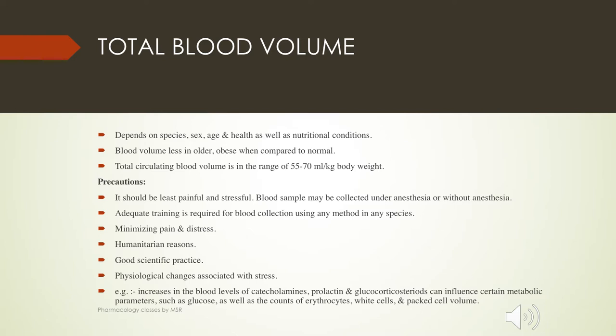Whenever we are collecting blood from animals, we have to collect the amount of blood depending upon the species, age, sex, and health of that particular animal. For older animals, the blood volume in their body will be less compared to normal. There is approximately 55 to 70 ml per kg of body weight.